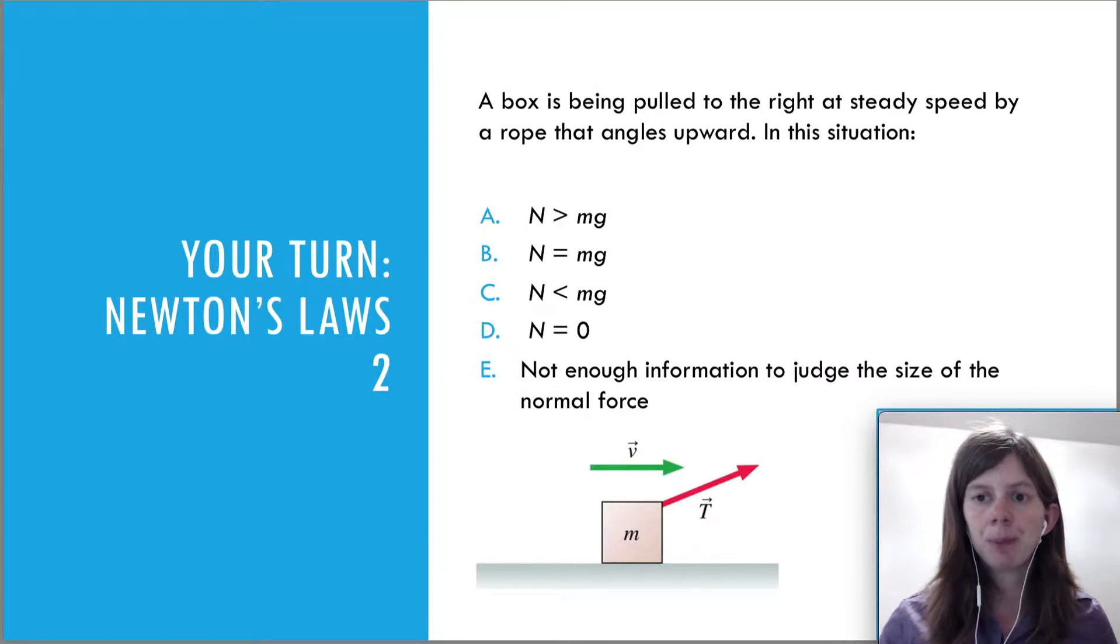Let's look at the next one. A box is being pulled to the right at steady speed by a rope that angles upward. In this situation, how does the normal force compare to the weight? It actually doesn't even matter that it's pulled at steady speed here because we care only about the y forces in order to figure out the normal force.